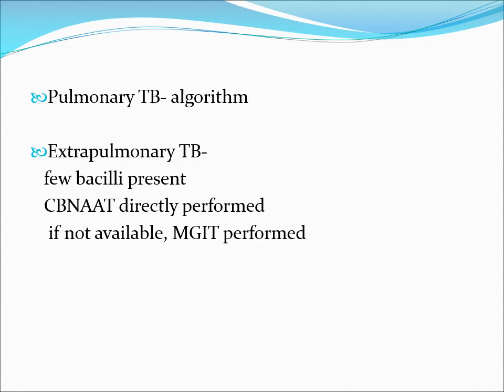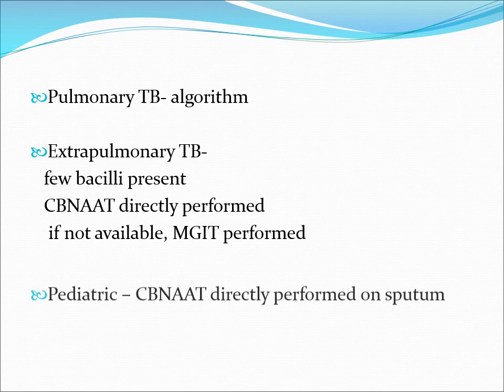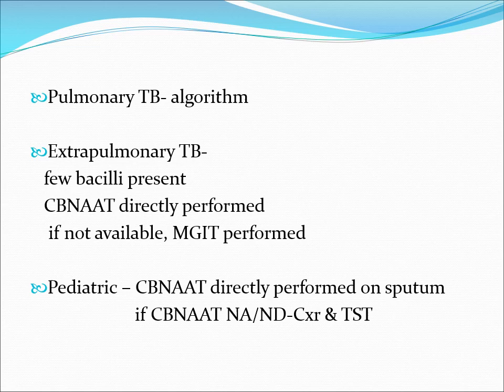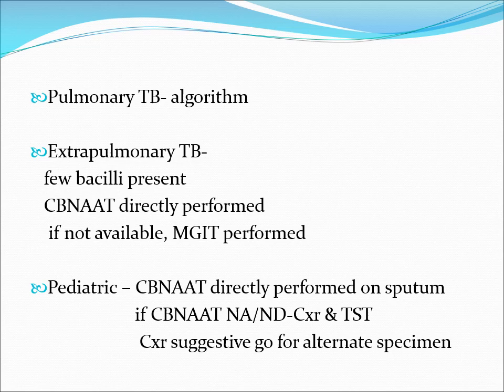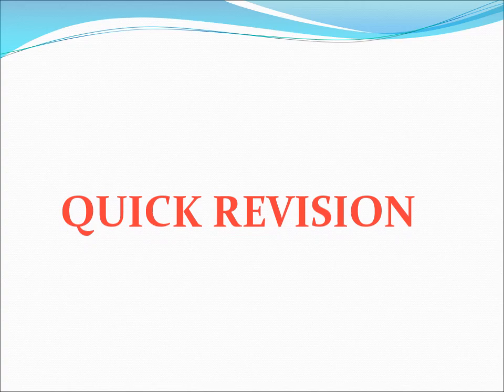For extra-pulmonary TB, since bacterial load is very low, directly go for CB-NAAT. If CB-NAAT facility is unavailable, use MGIT — Mycobacterial Growth Indicator Tube. For pediatric patients, directly perform CB-NAAT. If CB-NAAT is unavailable or negative in children, use chest X-ray and tuberculin test to guide diagnosis. If chest X-ray is suggestive, proceed to alternate specimens and treatment accordingly.